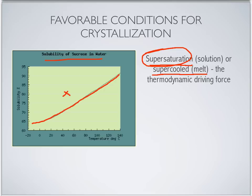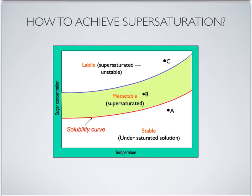To achieve the supersaturated state, we can either cool below the melting point of a compound — the crystallizing species such as water or triglycerides in oil — or by increasing the concentration in a solution greater than the solubility concentration. We have to be above the solubility line, which means we have to create conditions to go to the supersaturated state. On this slide, we will discuss how to achieve the supersaturated state for a solution.